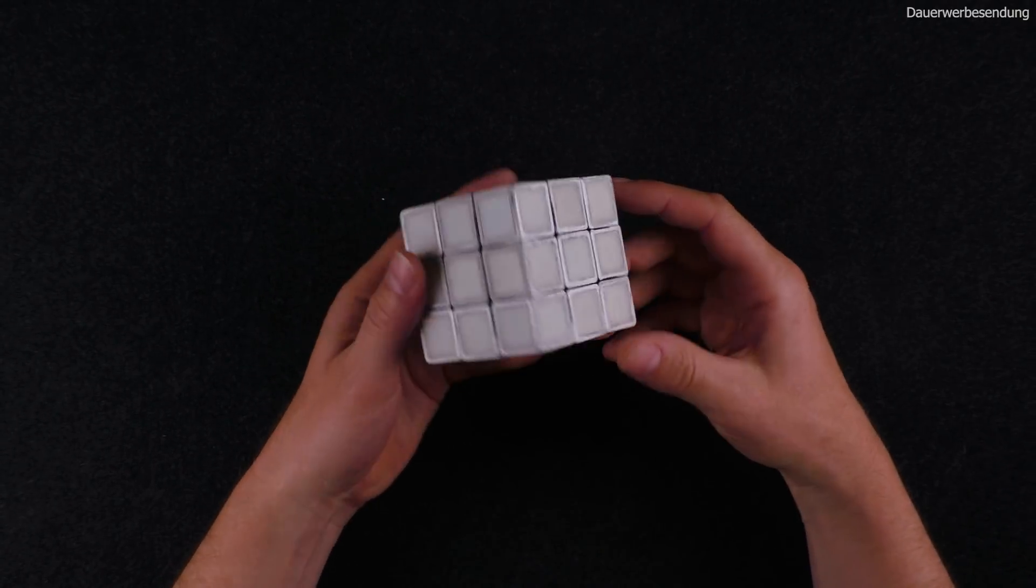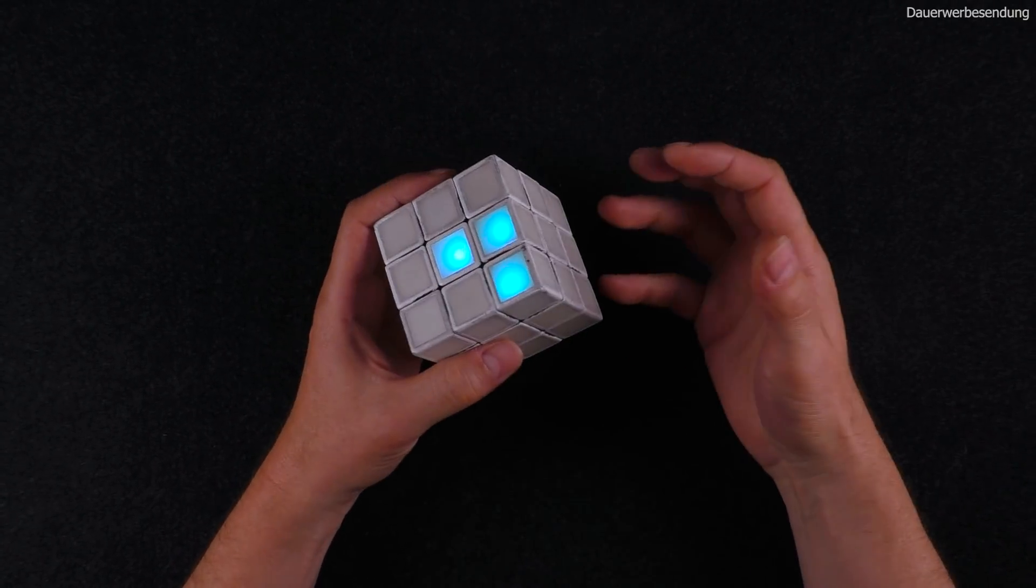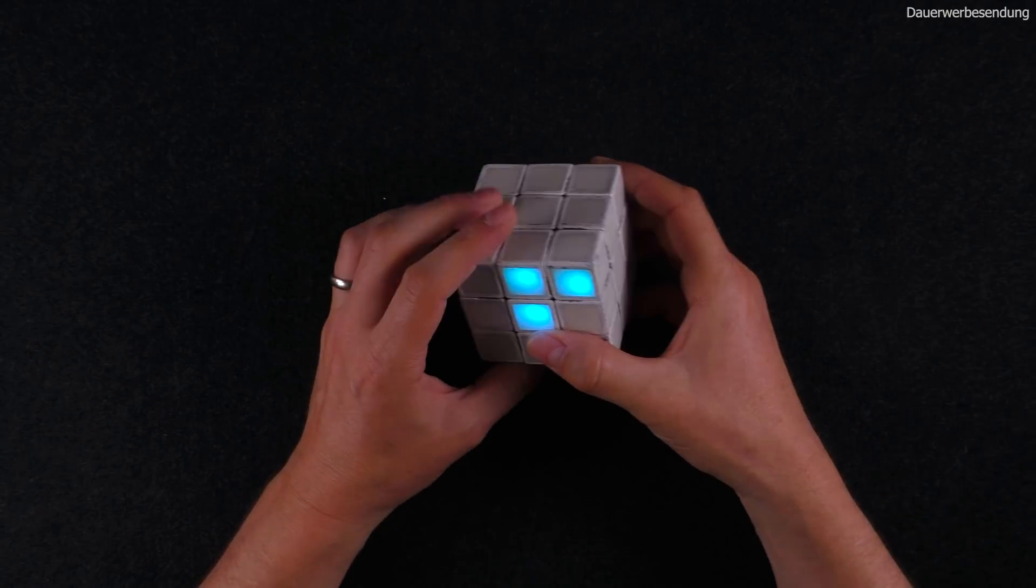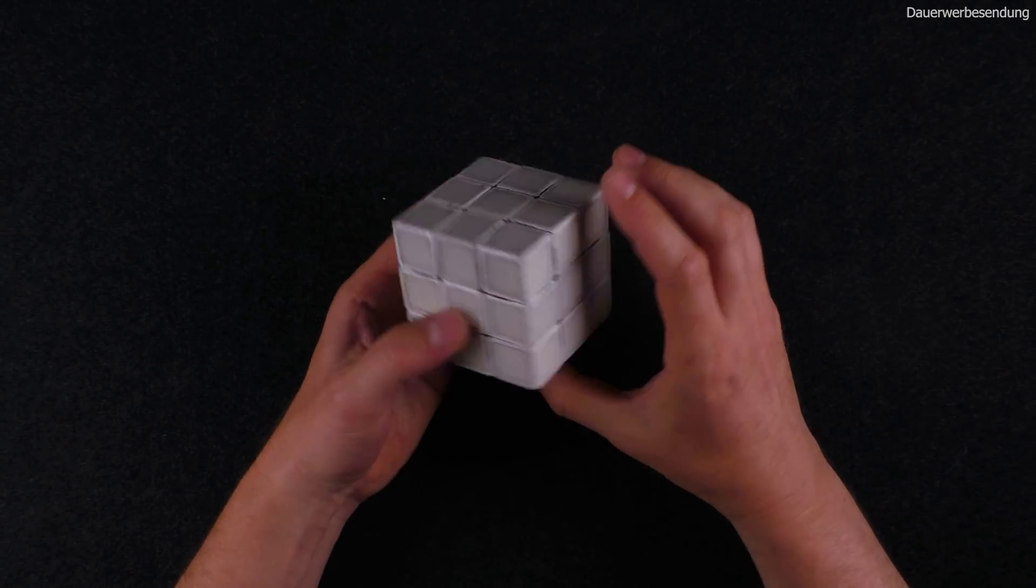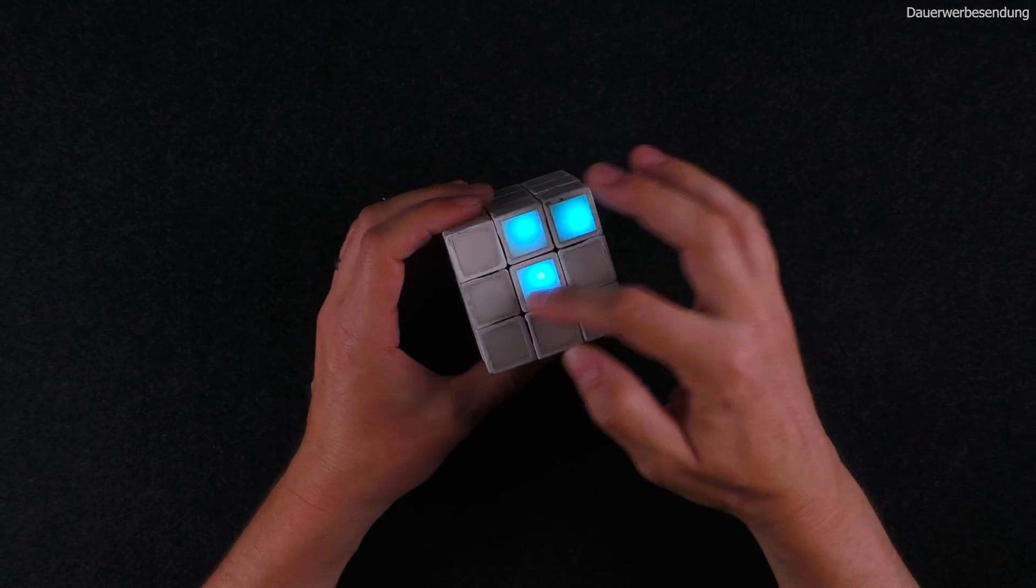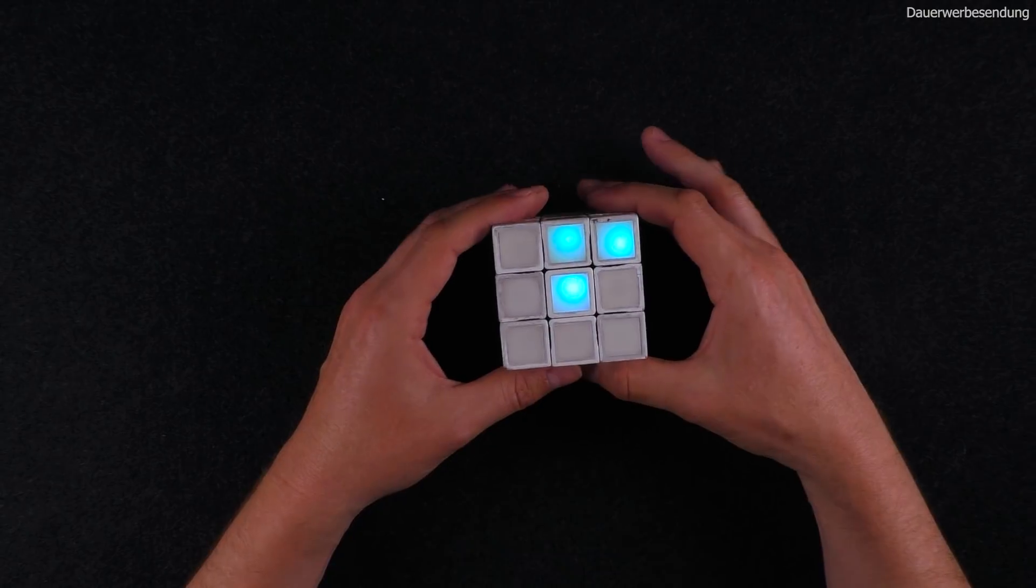You can see that three of the tiles are now lit and this already gives us some information because the target is actually to make this entire cube light up in blue color. Right now there are only three faces.